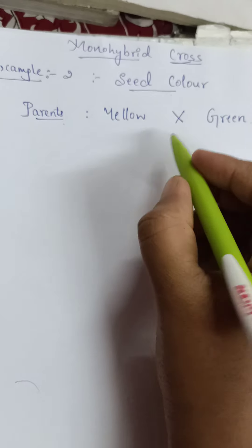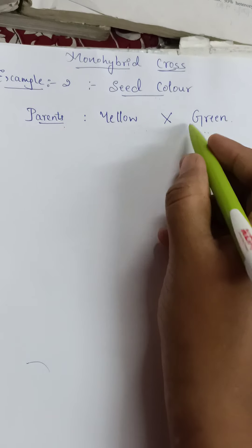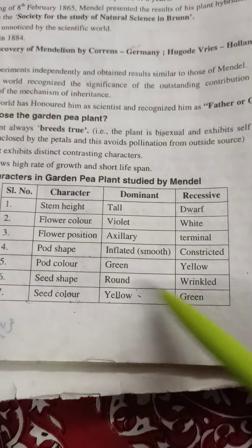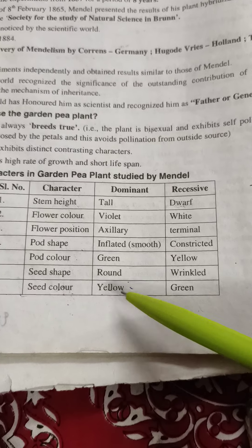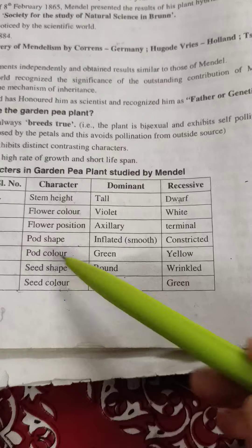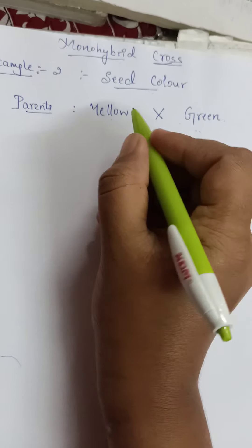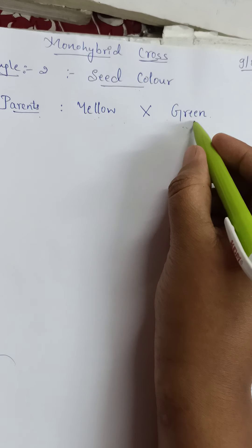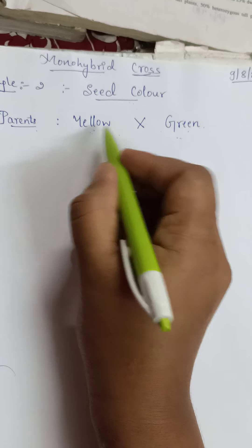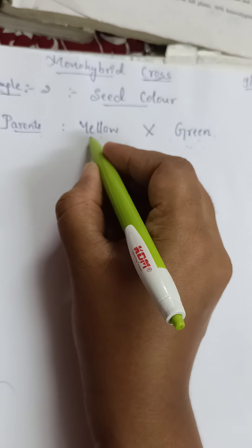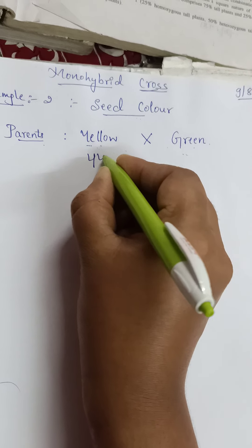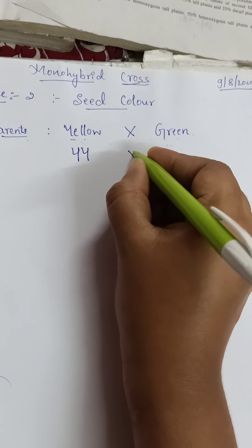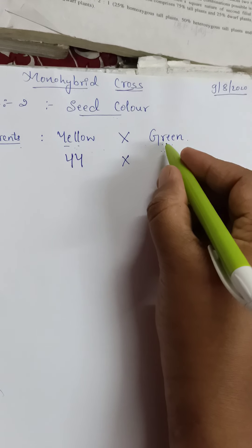For seed color, the parents will be yellow and green. I told you to learn this table — when it comes to seed color, instantly you should remember yellow and green as dominant and recessive characters. Yellow is dominant and green is recessive. Dominant means it will express its characteristic feature, so we take the first letter of the dominant character two times: capital Y and capital Y.